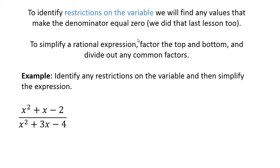So just factor the denominator, see anything that would make it equal zero. Now to simplify a rational expression, this is really the big thing today. Factor the top and bottom, and then divide out any common factors. So let's look at an example here. Identify any restrictions, and then simplify the expression.